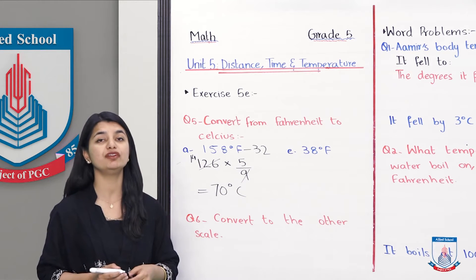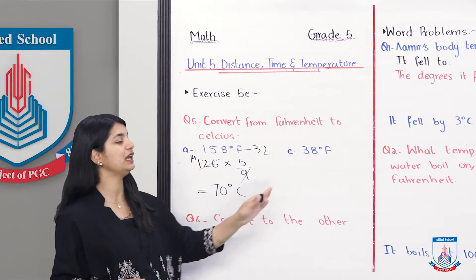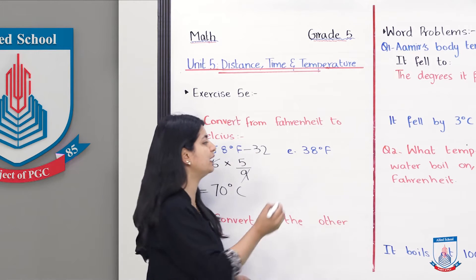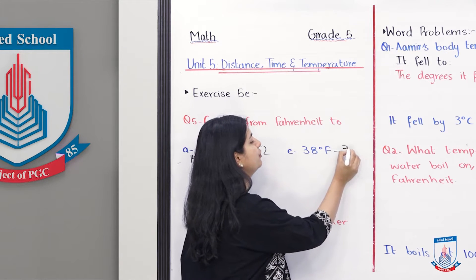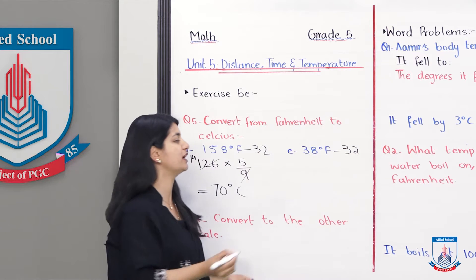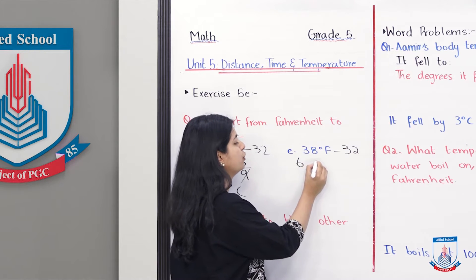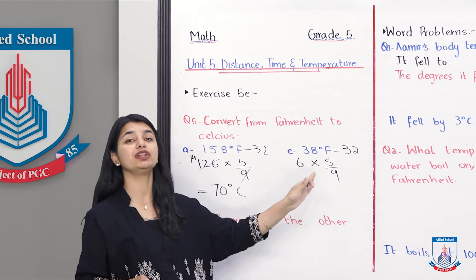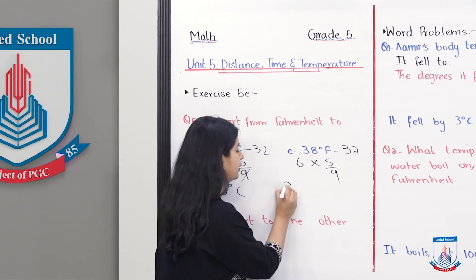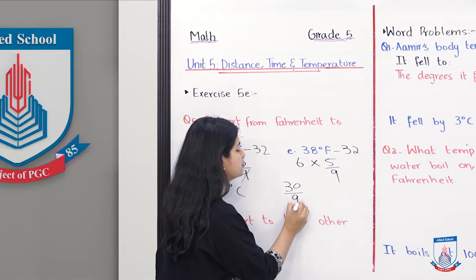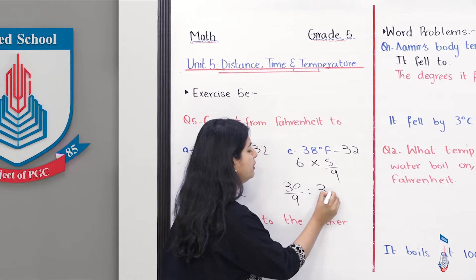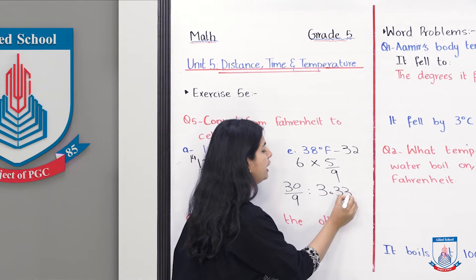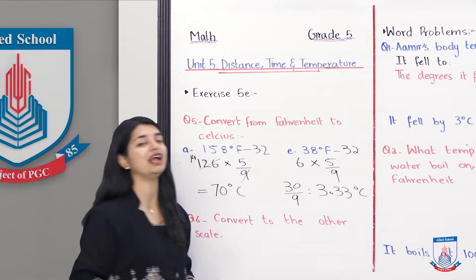And in this way you have solved the first part. If we do this part, first you will do minus 32, here it will only be 6 degree Fahrenheit. You will multiply it by 5 over 9 that will be about 30 over 9. If you solve it you will get around 3.33 degree Celsius and that will be your answer for part E.